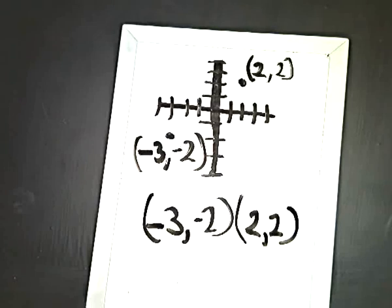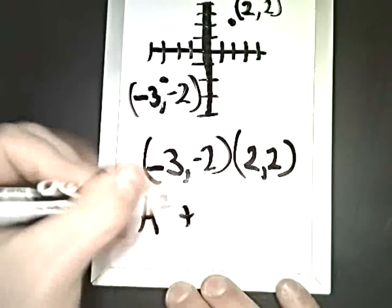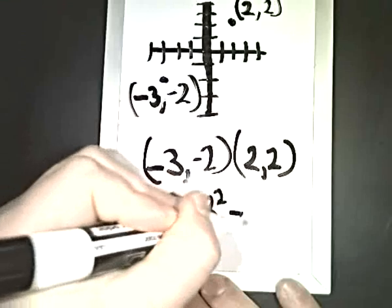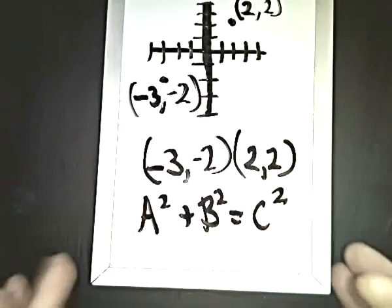Originally when you look at the question, you should determine what it's asking you to do. In most cases, it will say find the distance. So when you see the word distance, the very first thing that you should do is write down the Pythagorean theorem, which is a squared plus b squared equals c squared, which will help us find the third side of a right triangle where we know the other two sides. Now, what does that have to do with distance?